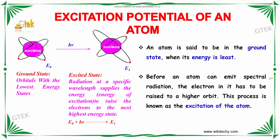We will see about the excitation principle and potential of an atom. Once an electron which is rotating in the orbitals with the lowest energy — that is referred to as ground state — radiation at a specific wavelength supplies the energy, the energy of excitation, to raise the electrons to the next highest level. That is the excited state.